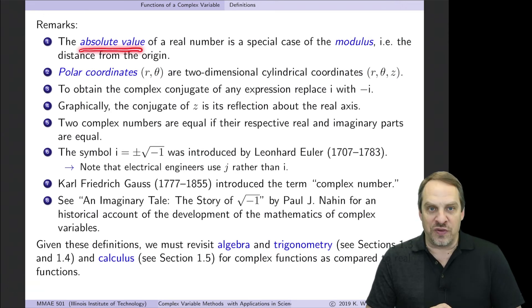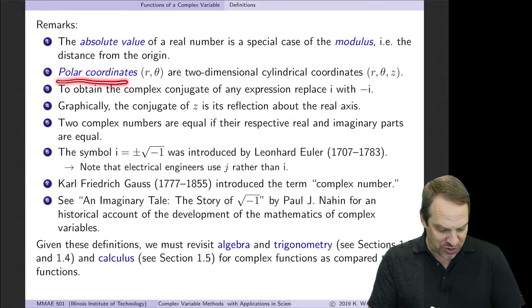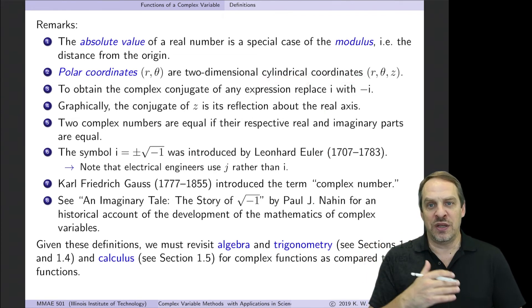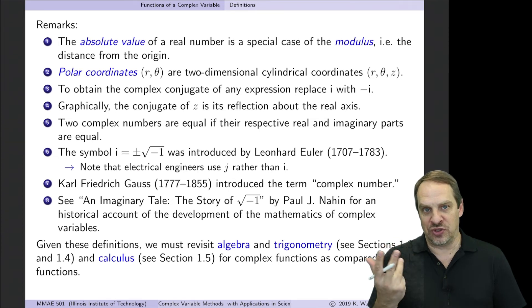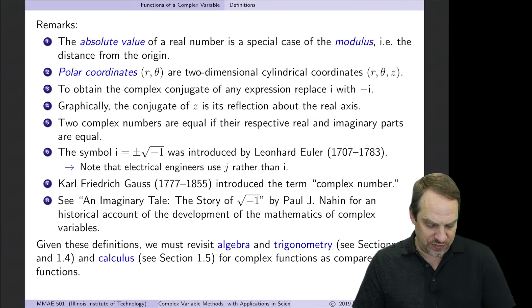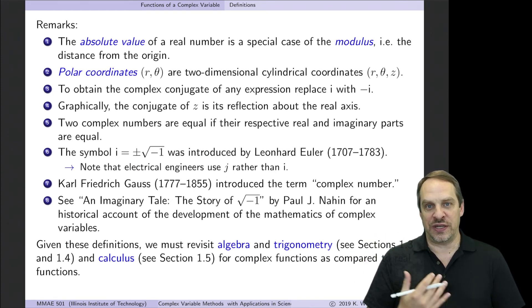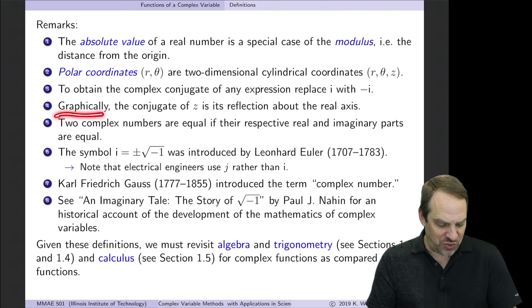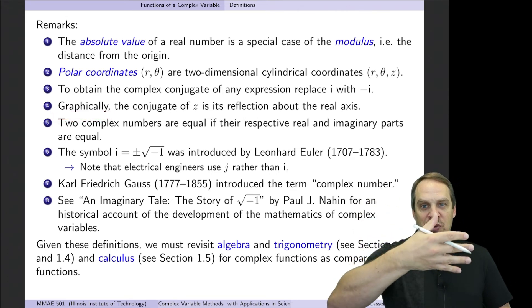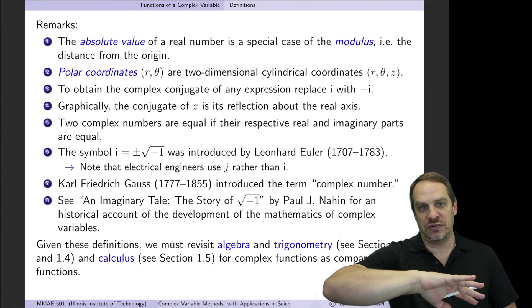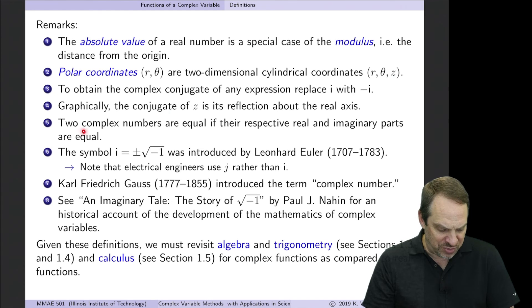So as I said, the absolute value of a real number is simply just the special case of the modulus. Polar coordinates is the 2D version of cylindrical coordinates. So don't be confused by that. Cylindrical is R theta Z. Polar is R theta. So it's just the 2D version of cylindrical coordinates. As I said a moment ago, to get the complex conjugate of some complex expression, complicated expression, just take all your I's and change them to minus I's, and you have the complex conjugate. Graphically, what that represents is taking a reflection. So when you take the complex conjugate, you're just reflecting it about the x-axis, because the y's become negative. For two complex numbers to be equal, you have to check that the real and the imaginary parts are the same.